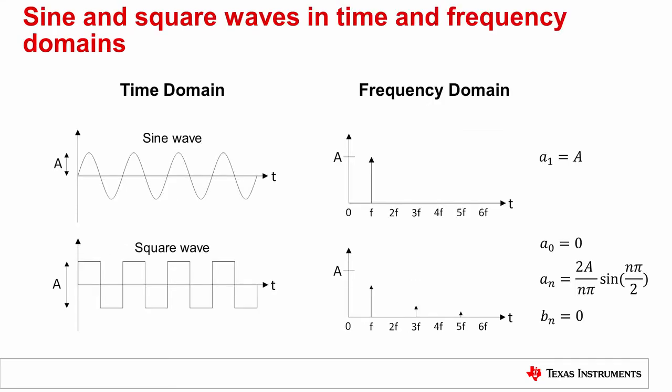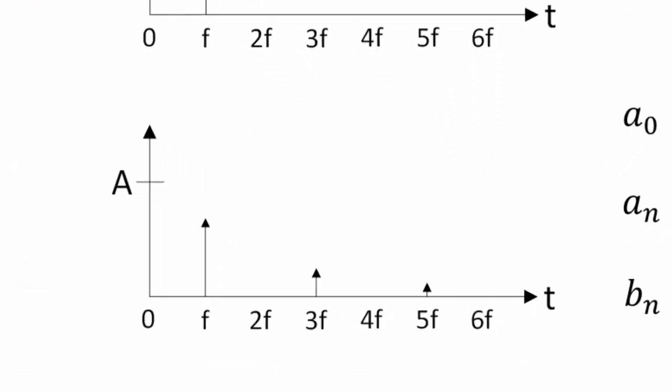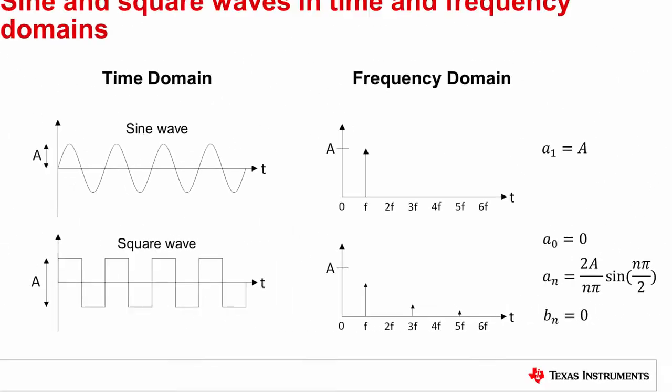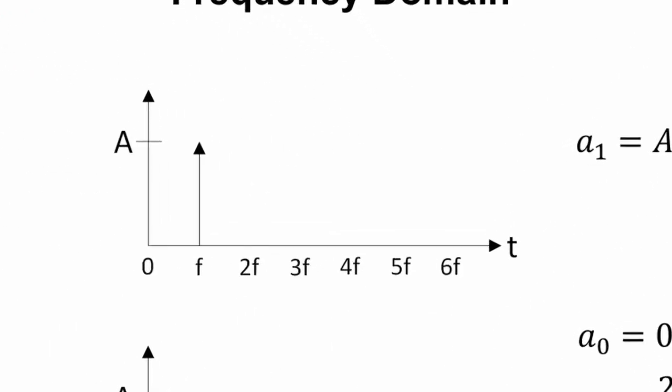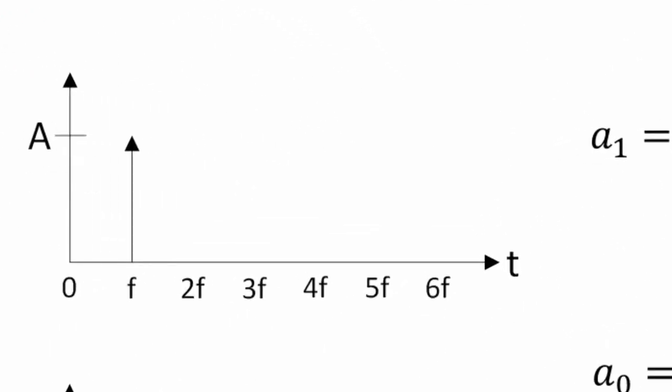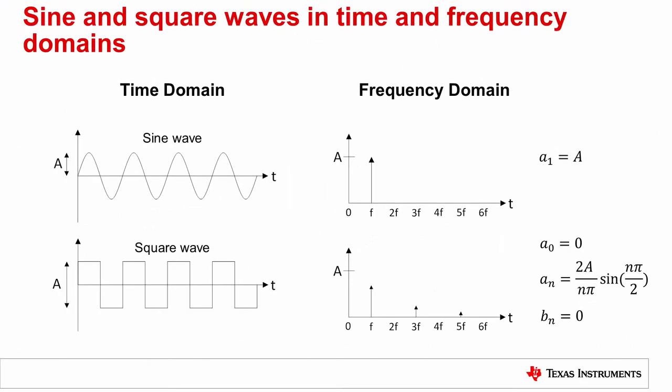The rising and falling edges of digital signals can generate EMI at harmonic frequencies. In the frequency domain, an ideal square wave consists of spectral energy localized at the fundamental frequency and its odd harmonics. Compare this to an ideal sine wave, which consists of spectral energy localized only at its fundamental tone.